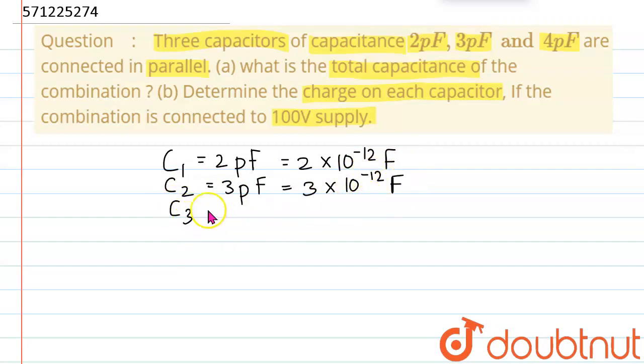And then C3 is equal to 4 picofarad, which in farad will be equal to 4 into 10 power minus 12 farad. And then we are given the 100 volt supply is acting on this combination. So, 100 volt V is equal to 100 volt and they are connected in parallel.